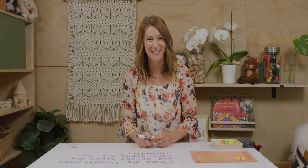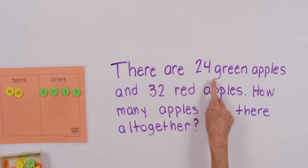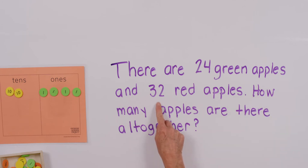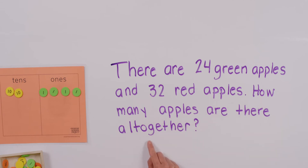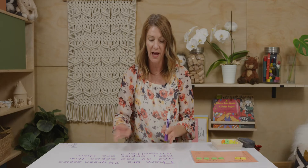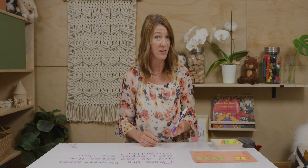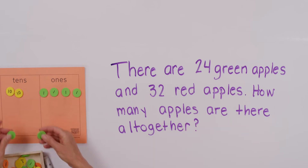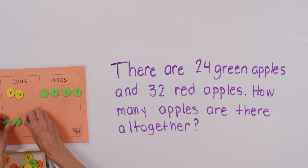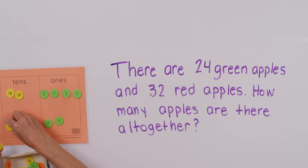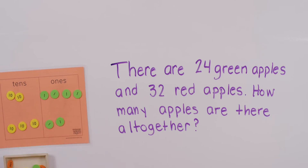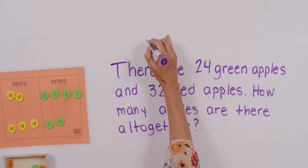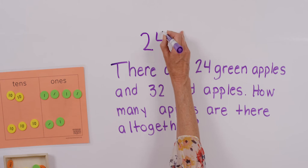Let's read the next story together: There are 24 green apples and 32 red apples. How many apples are there altogether? When we're reading these number stories, we can look for little clues. If we're talking about how many there are altogether, do you think we're looking for a part or the whole? I've got one of my number groupings here — the 24 green apples. Let's also represent the 32 red apples.